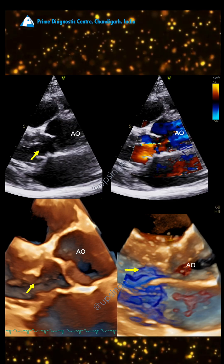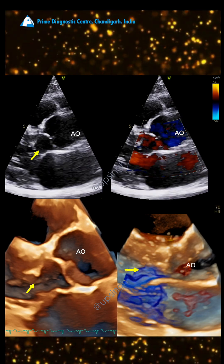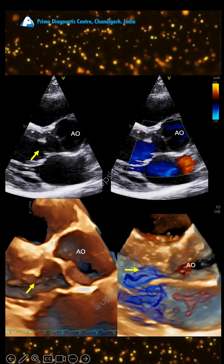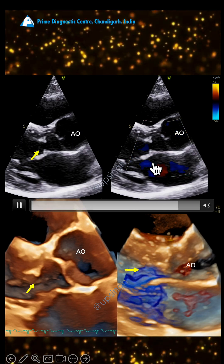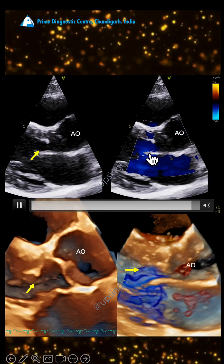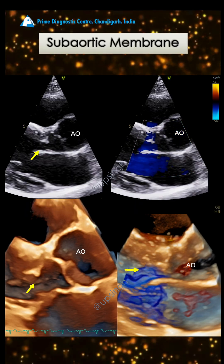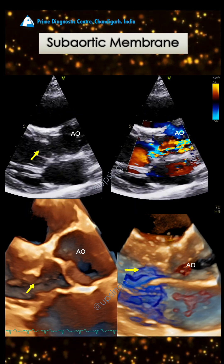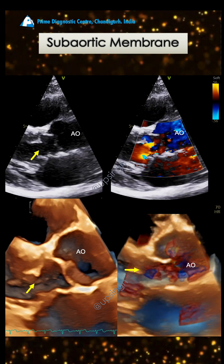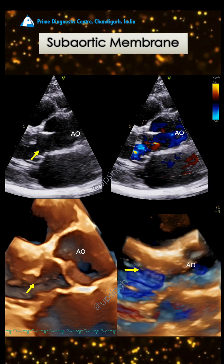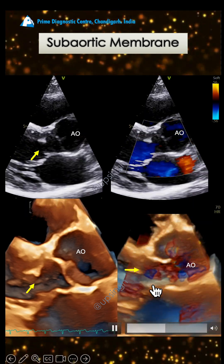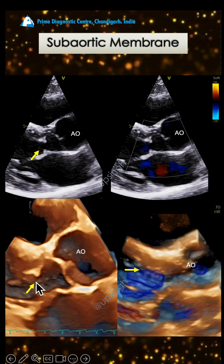This is a parasternal long axis view where you see a sub-aortic membrane marked by an arrow, and you see aliasing right where the sub-aortic membrane is. So there is a sub-aortic membrane below the aortic valve. On the color Doppler, you can see the aliasing happening before the aortic valve, at the sub-aortic membrane level.